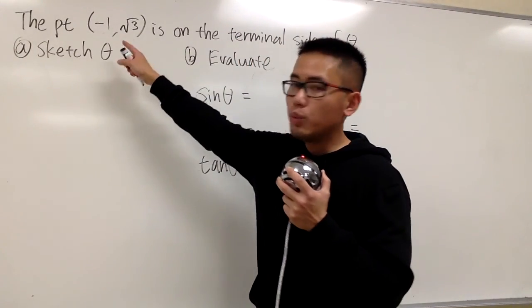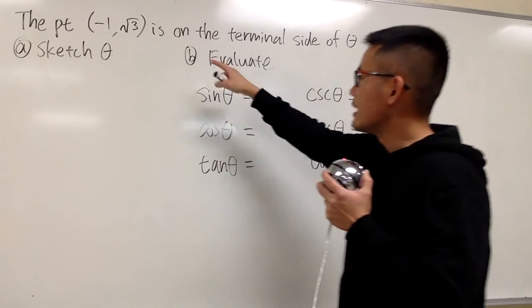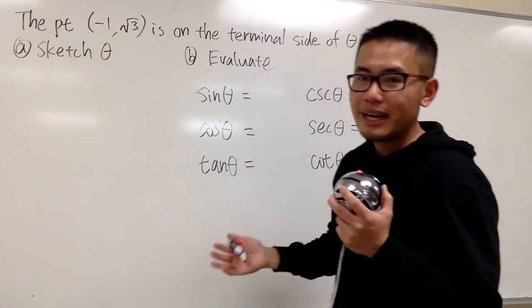Okay, we are given the point negative 1 comma square root of 3, and we know that's on the terminal side of theta, so let's go ahead and make a sketch first.